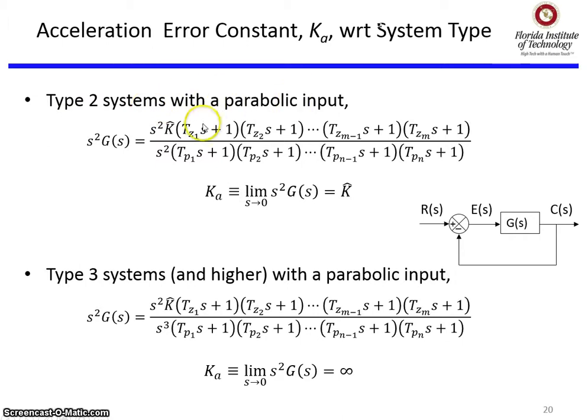Type 2 systems with a parabolic input. S squared G(s), I still have the s squared in the numerator. Now it's a type 2 system. There's two free s's. Guess what? But these guys cancel, and now Ka is a finite value, and it's just K hat. Because, again, all these guys cancel, and I'm left with ones. So all that remains is K hat when you run this limit.